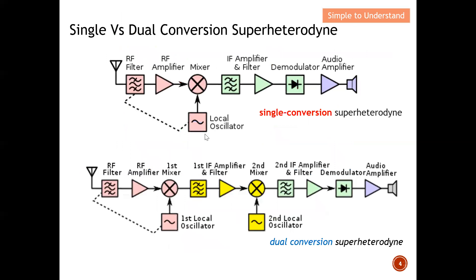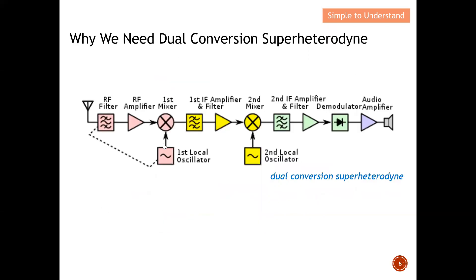Let's look at how the pre-selector plays a role in rejecting the image. Before continuing, I'd like to discuss single and dual conversion superheterodyne receivers. The top diagram shows a single conversion receiver; the bottom shows the dual or double conversion superheterodyne receiver. There are additional components shown in yellow, which increase cost — so let's understand the motivation for having a dual conversion receiver.